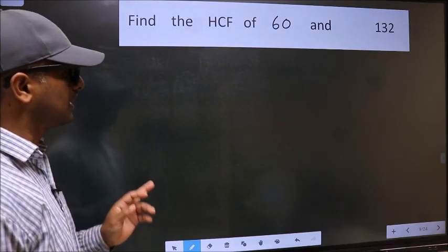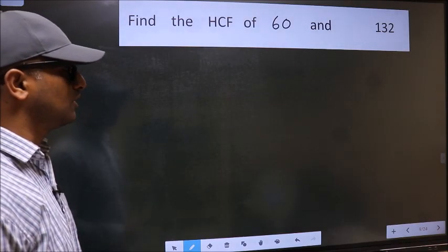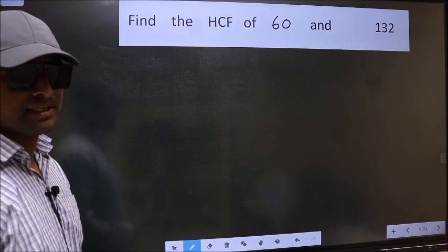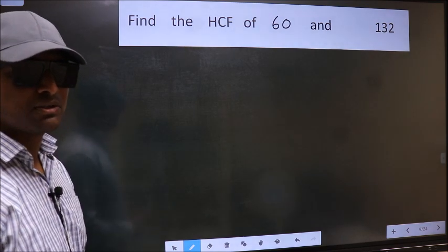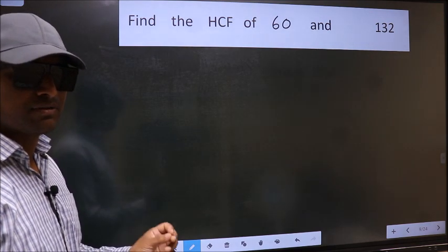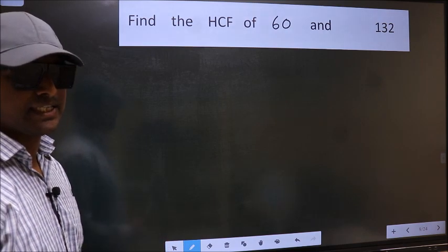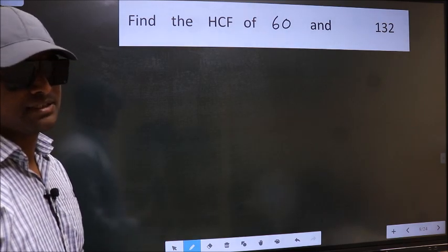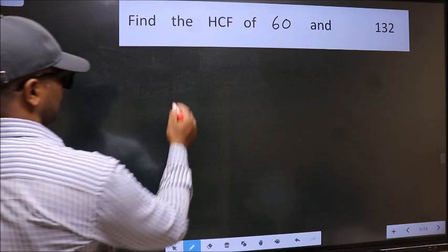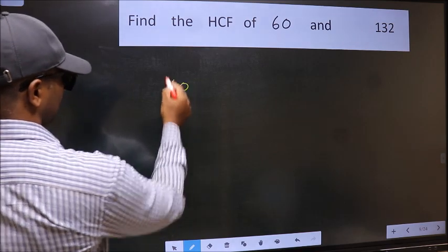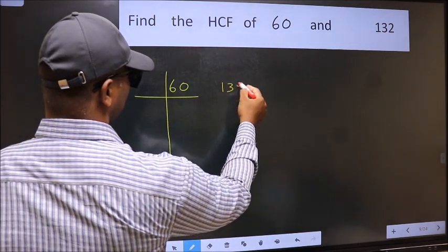Find the HCF of 60 and 132. To find the HCF, we should do the prime factorization of each number separately. What I mean is, see, 60 and 132.